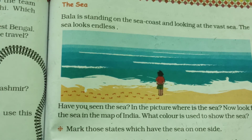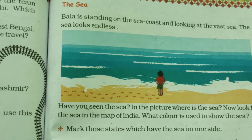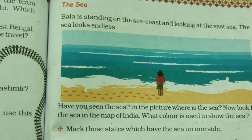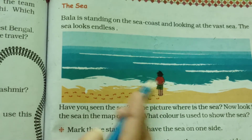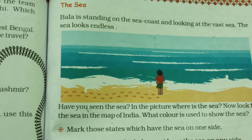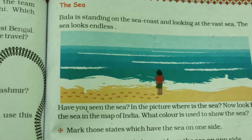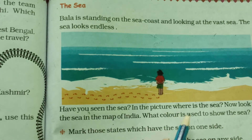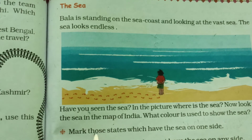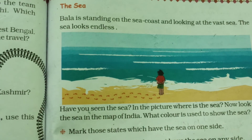Next page, page number 123. The Sea. Have you seen the sea before? Bala is standing on the sea coast and looking at the vast sea — the sea looks endless. In the picture, where is the sea? The sea is opposite to Bala. And what color is used to show the sea? It is blue color, so you can write here: blue color.